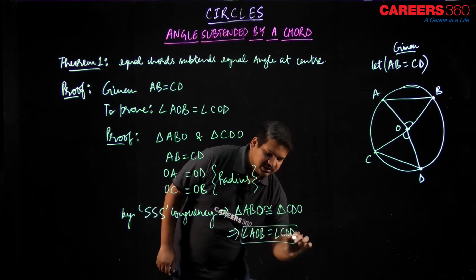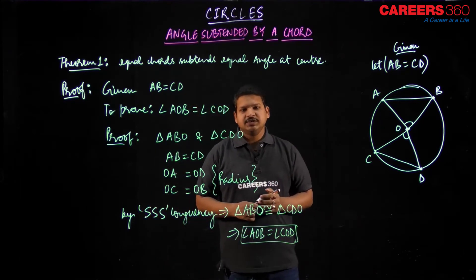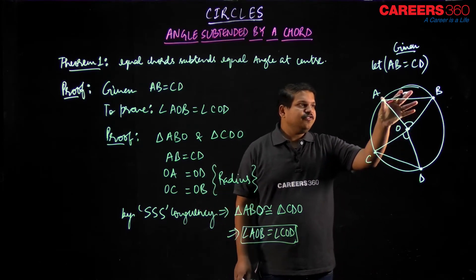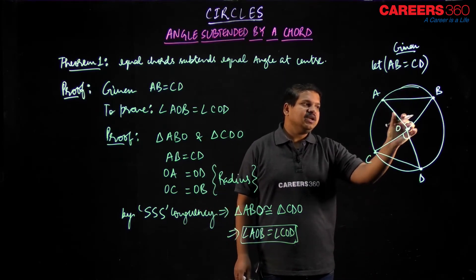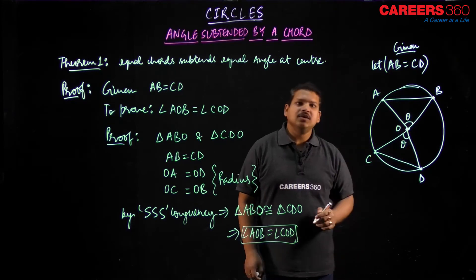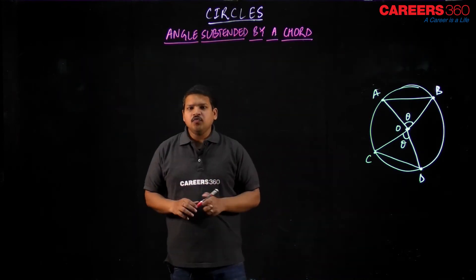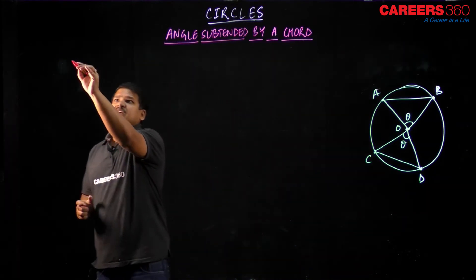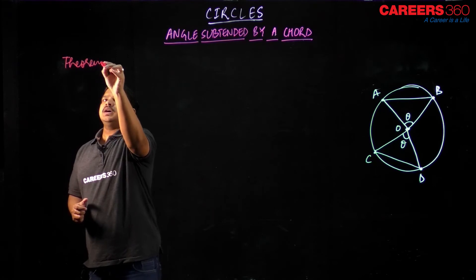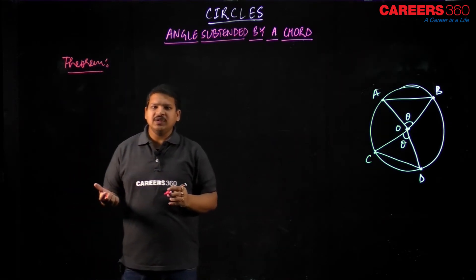And that directly means angle AOB will be equal to angle COD. I hope it makes sense to you. So that was the proof of this theorem — that if two chords are the same length, then their subtended angles are equal; if one is theta, the other would also be theta. Next, we have absolutely the converse of theorem number 1.